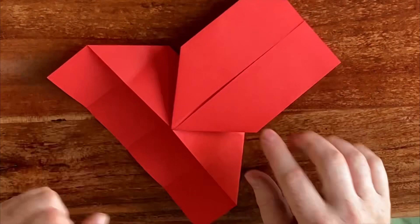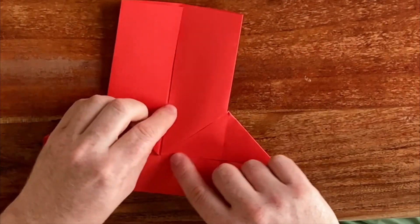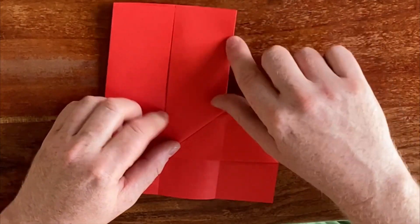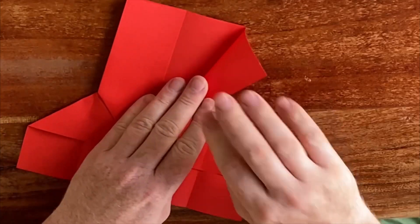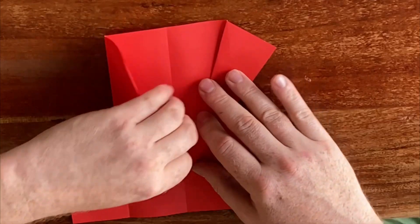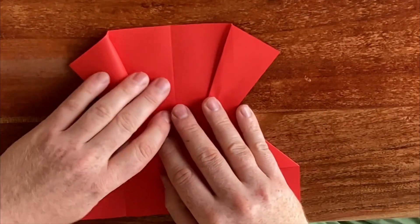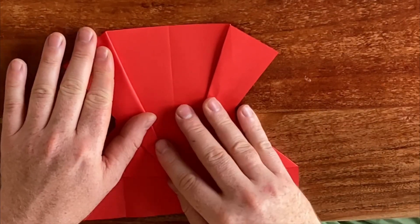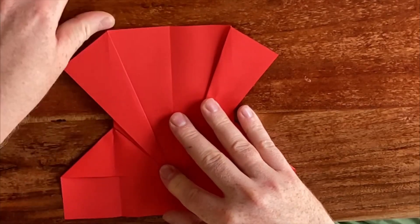Now flip over the paper and fold from this corner towards this corner outwards, so like this. Same on the other side, try not to pull too hard on it so you don't rip the paper in the corners, like this.